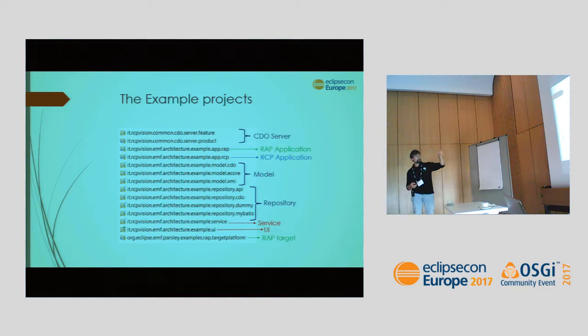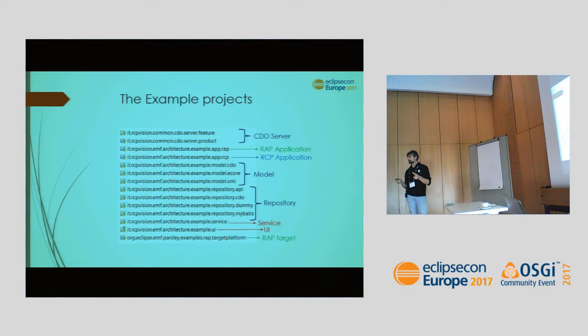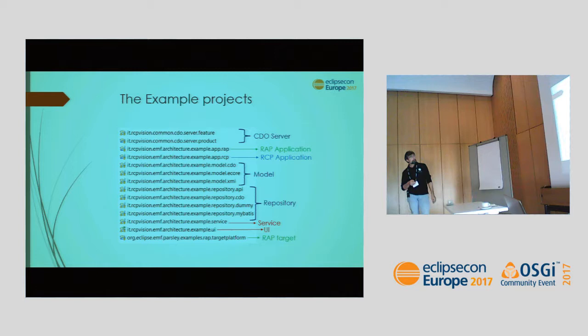Then we have three plugins for the model: the core, the API, and the two implementations. Then four plugins for the repository: one for the API and three for the different implementations. Then one plugin for the service, one for the UI, and one for generating the RAP target platform if you want to use RAP.